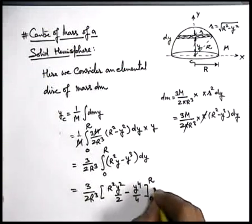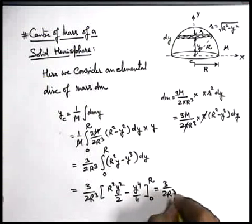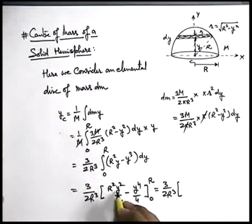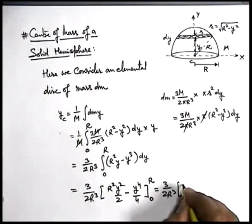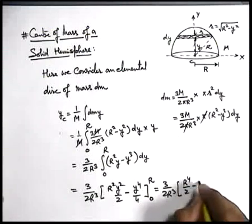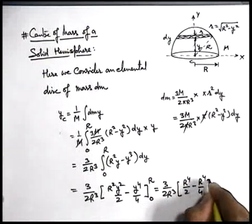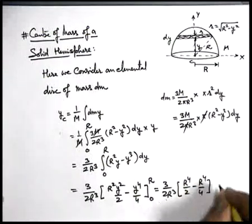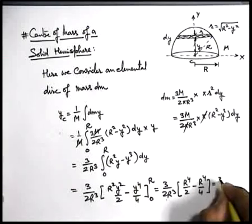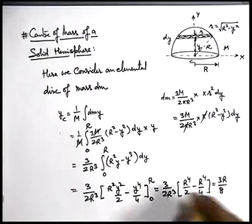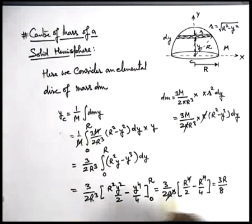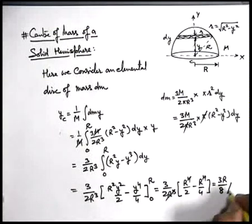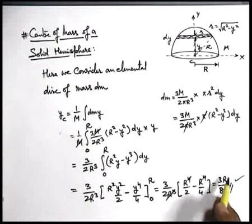So if we substitute the limits, this will be three by two R cubed. Inside it'll be R to the fourth by two minus R to the fourth by four. So it'll be, you can write, R to the fourth by two minus R to the fourth by four. This is R to the fourth by four, so it'll become three R by eight. Here you can see that this R cubed will cancel out with the fourth power of this R, so final result will be three R by eight.